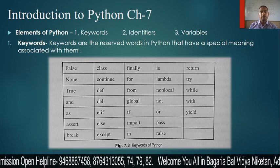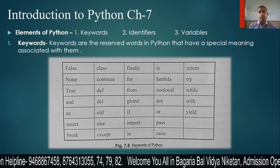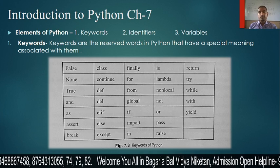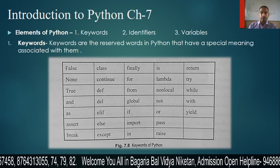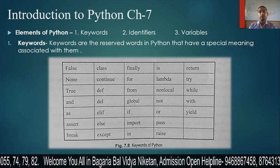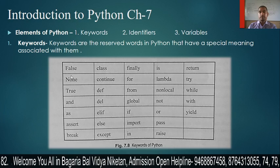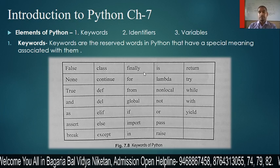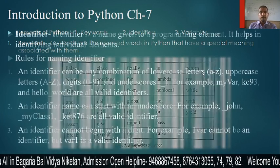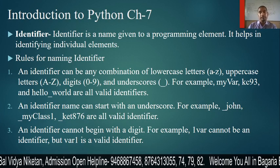Welcome to the Bhagdiyabal Vidya Niketan online classes. In the last video we read about elements of Python, keywords and identifiers. Keywords are the reserved words in Python that have a special meaning associated with them. Few examples of keywords are: false, class, finally, is, return, none, etc. Identifiers are a name given to a programming element.